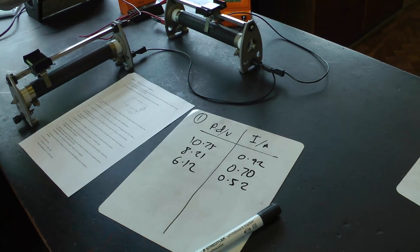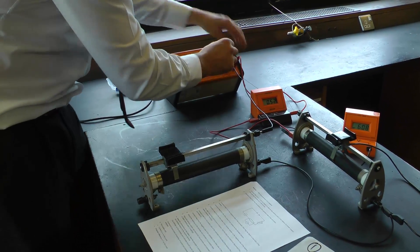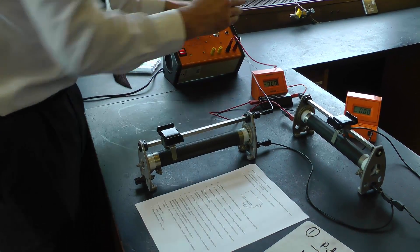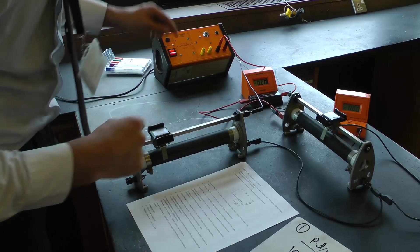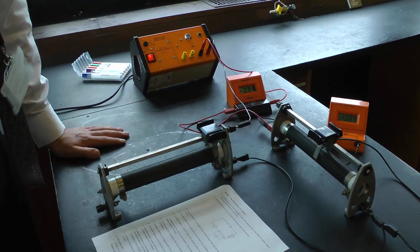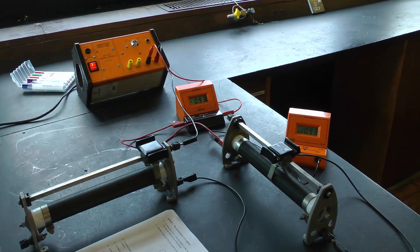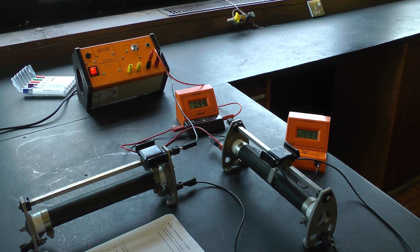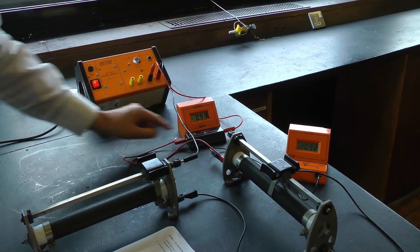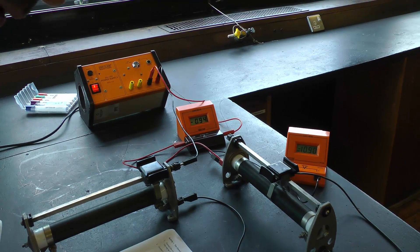I'm going to switch the polarity around, so I'll turn it off to be safe. Switch the polarity around, and now I'm making the current flow in the circuit in the opposite direction. I'll put it back to where I started from. So now I've got minus 10.93 volts, minus 0.94 amps.